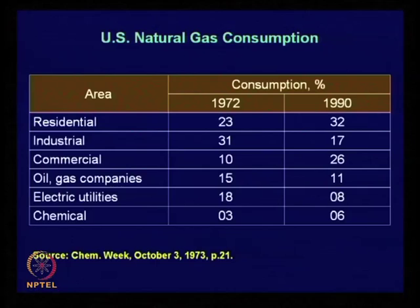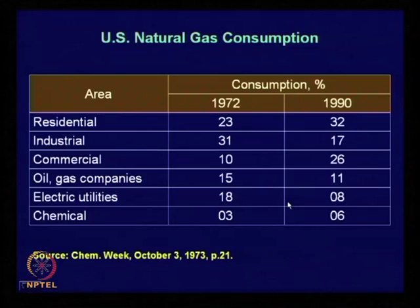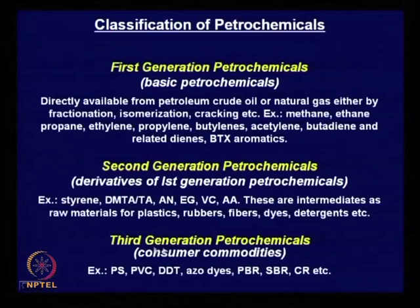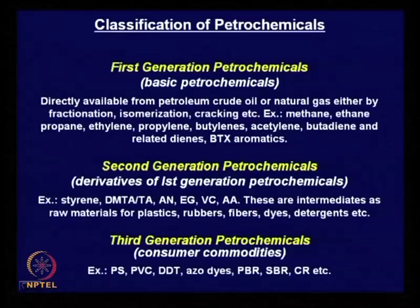There are three generations of petrochemicals. First generation — basic petrochemicals — are known as first generation. Second generation are derivatives of first generation petrochemicals. Third generation petrochemicals are consumer commodities — products like polypropylene, polyethylene, polyvinyl chloride, polystyrene. These are third generation petrochemicals because they are chemical compounds made from petroleum.